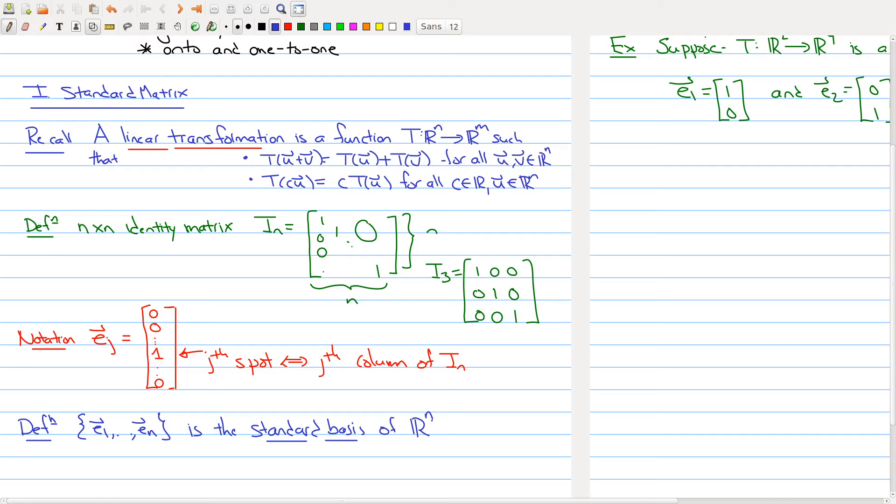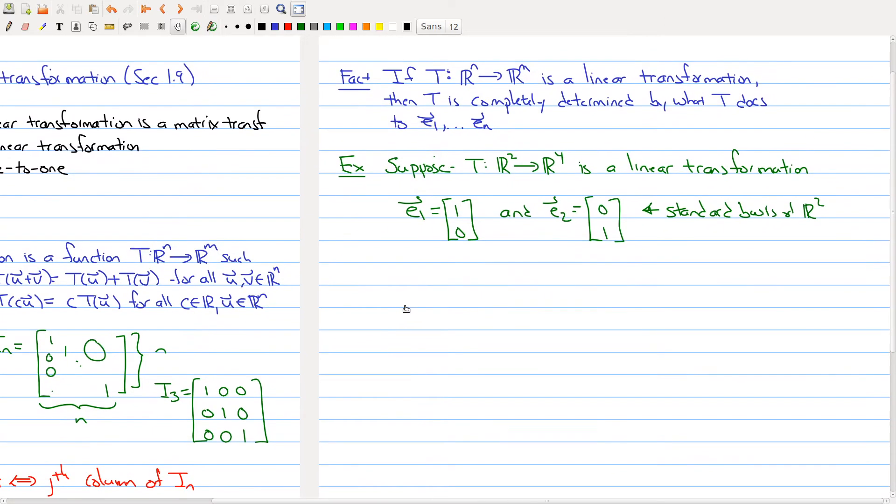Now what does this all have to do with a linear transformation? Well, the next theorem tells us something very important about linear transformations. Here's the following fact: suppose that you have a linear transformation. Then this transformation is completely determined by what it does to the standard basis element of the domain Rⁿ. So this is in some ways kind of amazing. If you know where these guys go and if you know that you have a linear transformation, you can actually determine where every single vector of Rⁿ gets sent to in terms of Rᵐ.